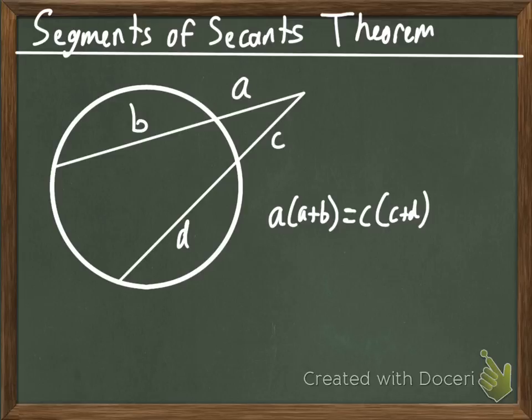Segments of Secants Theorem. So, we have two secants from this common external point outside the circle here. We have one secant up here that's broken into A and B, where A is the external segment of the secant.